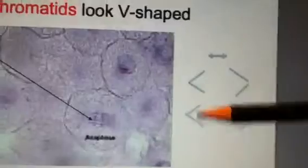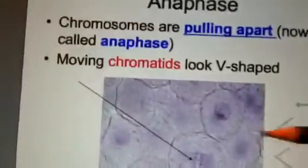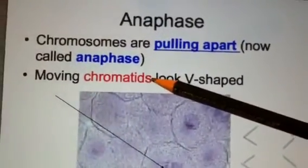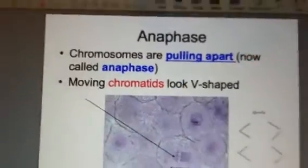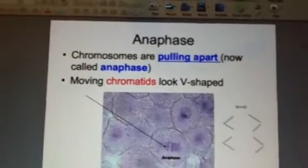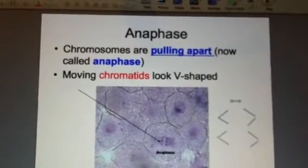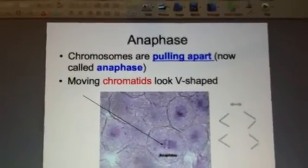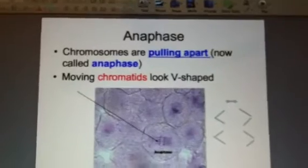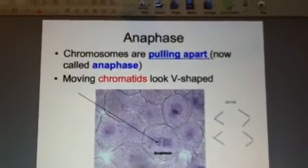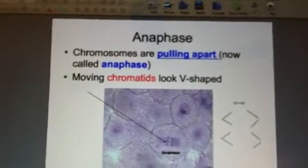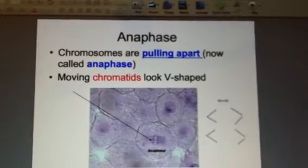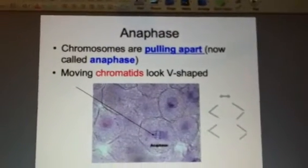These single-strands of DNA are known as chromatids. One way I tell students to remember that is 'kids,' like little kids — but don't put 'kids' on the test, it's chromatids. So pulling apart and chromatids are your answers for this particular slide.